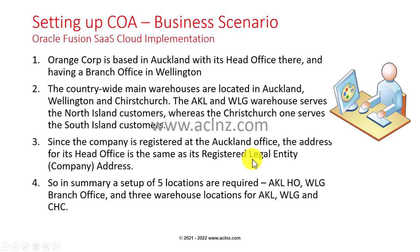In one of my previous videos I showed you how to go about creating the legal address and then creating the legal entity respectively. While creating the legal entity we used the legal address. In summary, a setup of five locations is required: Auckland head office, Wellington branch office, and three warehouses located in Auckland, Wellington, and Christchurch.